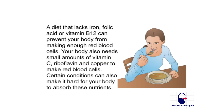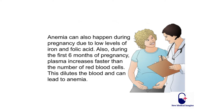A diet that lacks iron, folic acid, or vitamin B12 can prevent your body from making enough red blood cells. Your body also needs small amounts of vitamin C, riboflavin, and copper to make red blood cells. Certain conditions can also make it hard for your body to absorb these nutrients. Anemia can also happen during pregnancy due to low levels of iron and folic acid.